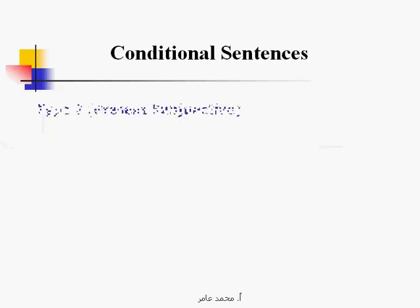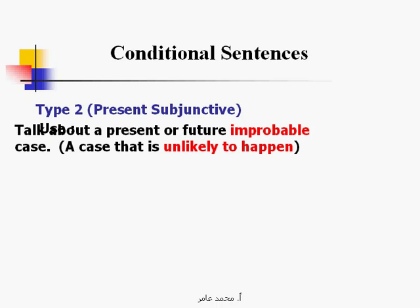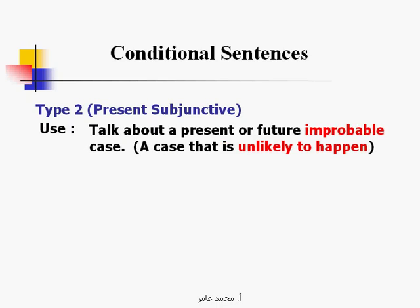Conditional sentences type 2 — present subjunctive. We use type 2 to talk about a present or future improbable case, impossible case, a case that is unlikely to happen.